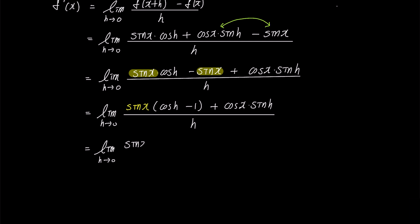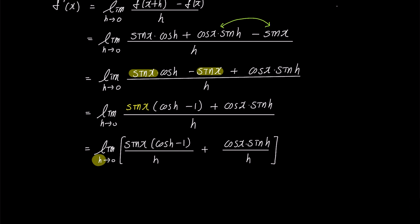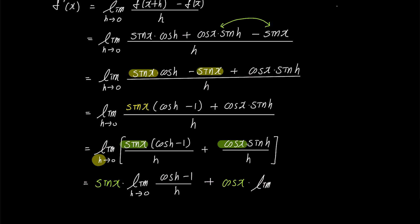Now let's separate this fraction into two fractions: the limit of sine x times (cosine h minus 1) over h, plus cosine x times sine h over h. In the limit as h approaches 0, the variable that is relevant is h. The terms sine x and cosine x are independent of h, so we can bring them outside the limit. This gives us sine x times the limit of (cosine h minus 1) over h, plus cosine x times the limit of sine h over h.